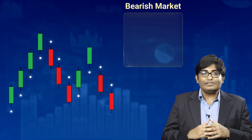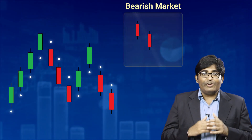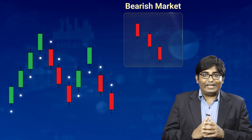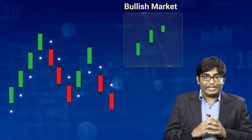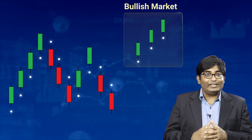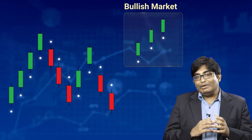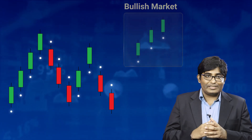This indicator appears in the form of dots along the price line. In a bearish market, we can find the dots above the price. In the case where the market is bullish, we can find the dots below the price.